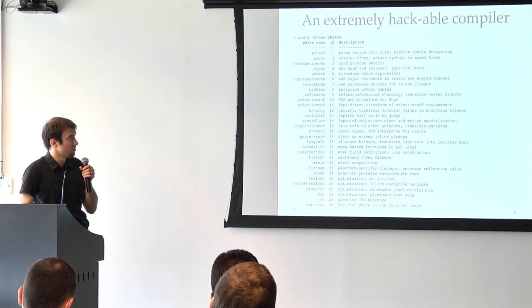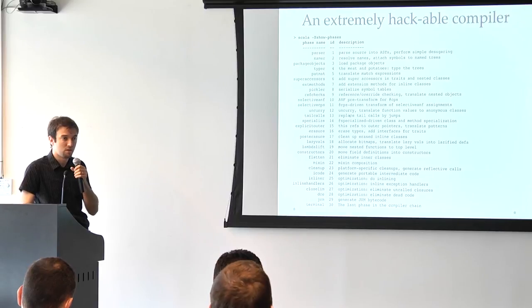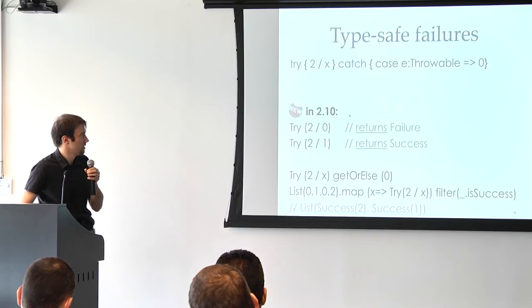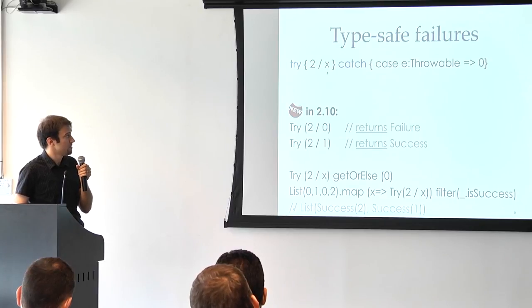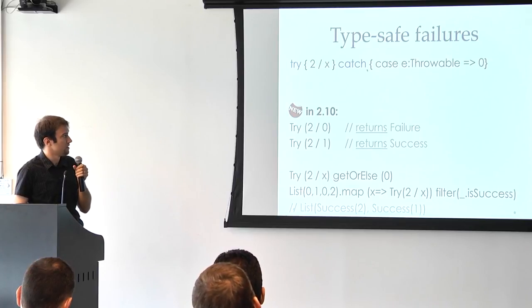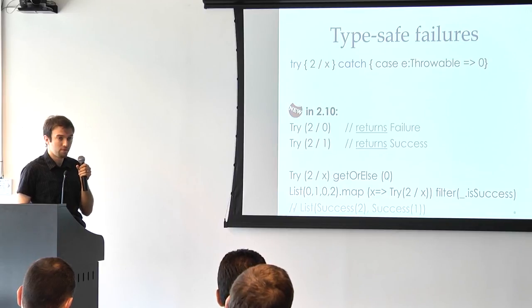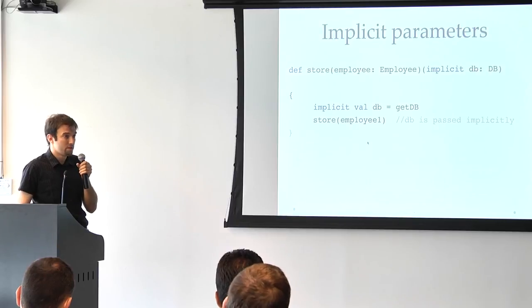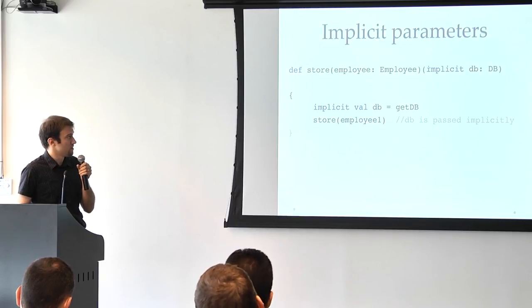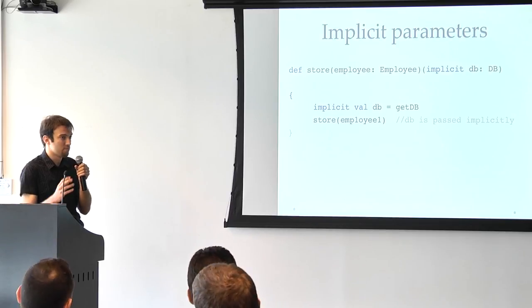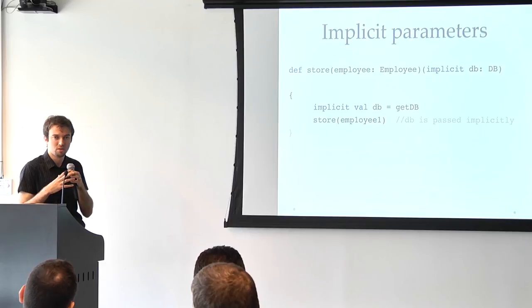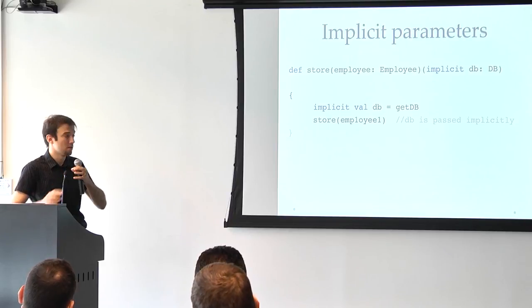The compiler is very hackable. So you can just print out all the phases and actually add plug-ins to each one of those phases. The compiler library is actually part of the Scala library. You have type-safe failures, which means that instead of writing this try-catch, you can just say, let's divide 2 by x. And if I get an exception, then this is the default. And you can also use this as part of the collection.